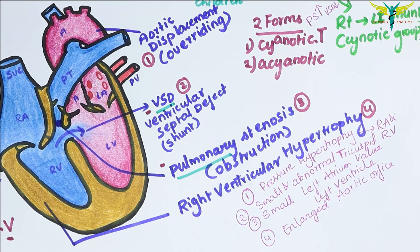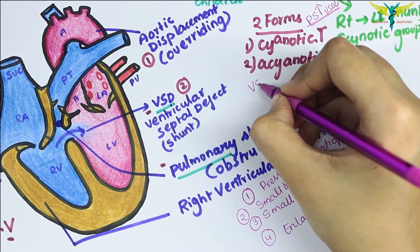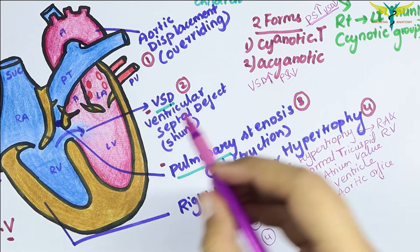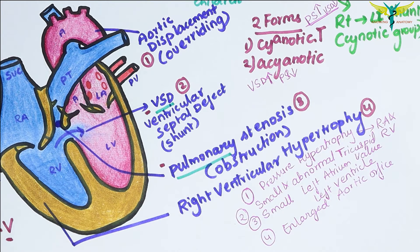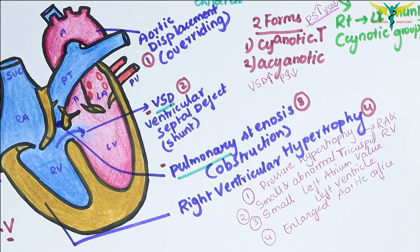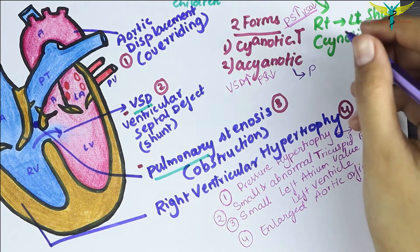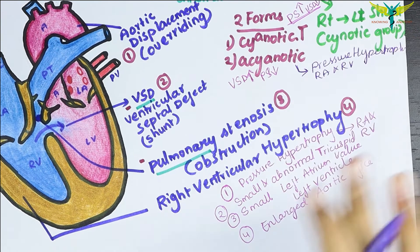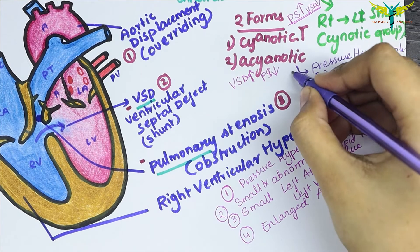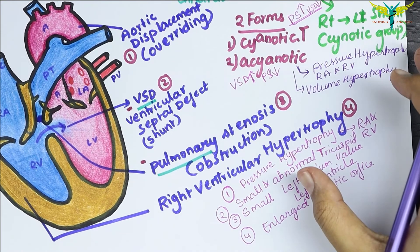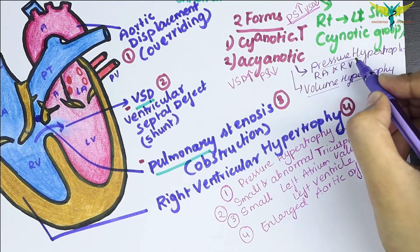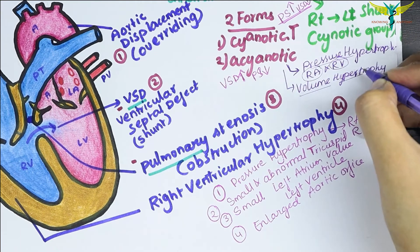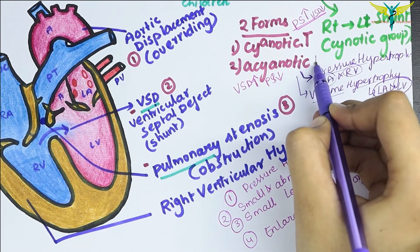In the acyanotic type of tetralogy, it is the opposite: the VSD is larger and the pulmonary stenosis is mild, resulting in a left-to-right shunt with increased pulmonary flow and increased volume in the left heart, but no cyanosis. The heart effects include pressure hypertrophy of the right ventricle and right atrium, as well as volume hypertrophy of the left atrium and left ventricle. So in the acyanotic type, both pressure and volume hypertrophy are present.